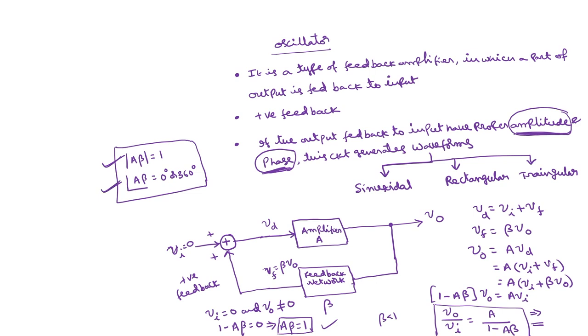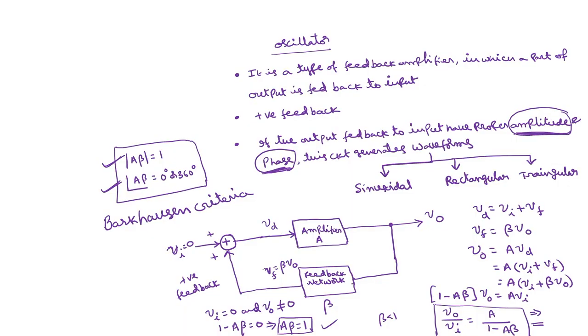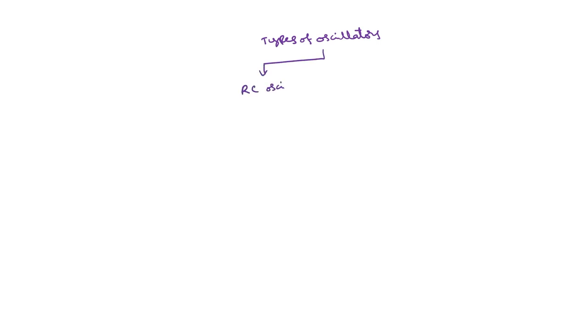This particular criterion is called the Barkhausen criterion — the basic principle of the oscillator. There are different types of oscillators: one is called the RC oscillator, where the feedback circuit is constructed using R and C components. If the feedback is constructed using L and C components, the corresponding oscillator is called an LC oscillator. There is also the crystal oscillator, which is not developed using an operational amplifier.